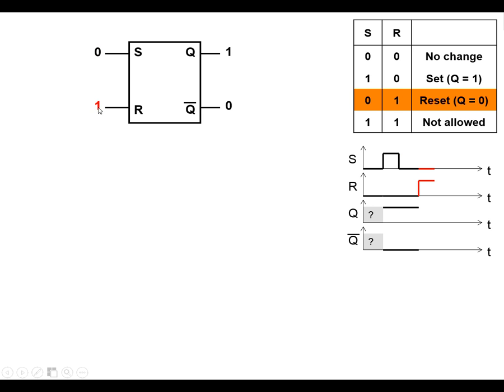I'm going to make R go high now, which is the reset state. Q is going to be reset low, which means that Q-bar is going to go high. And we see this on the diagram: R goes high, makes Q go low, and Q-bar go high.